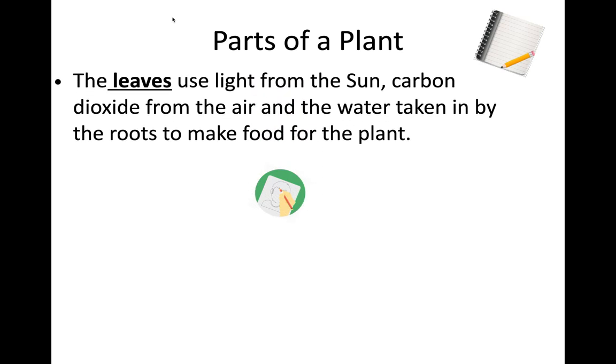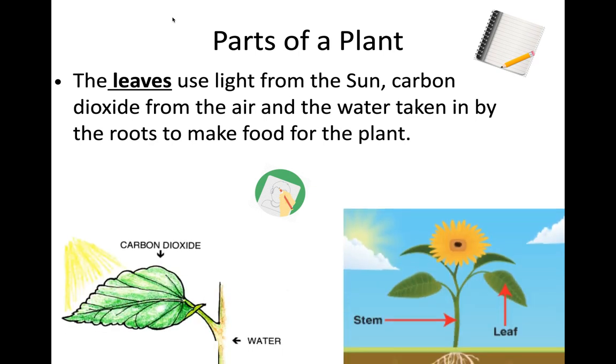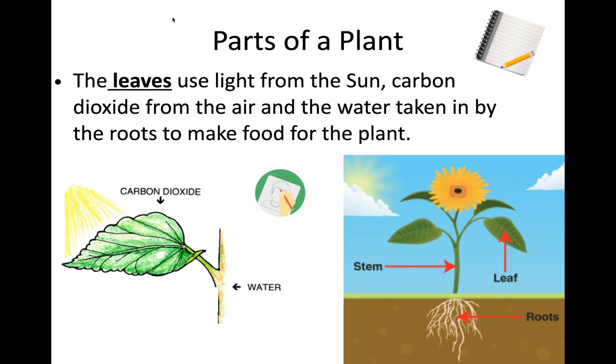The leaves use the light from the sun and carbon dioxide from the air and the water taken in by the roots to make food for the plant. Remember, this whole process is called photosynthesis.